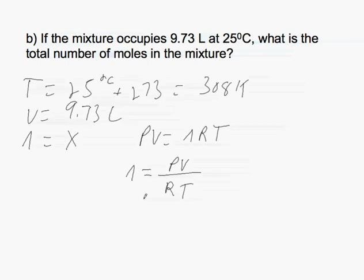We know what the pressure is. The pressure was given to us in the first half of the equation. We know the total pressure is equal to 0.390. We know what the volume is, which is 9.73.